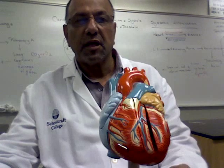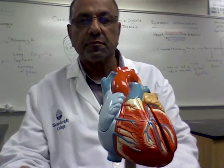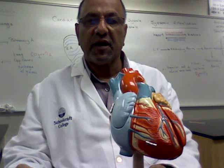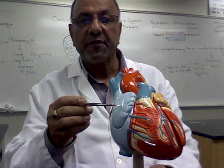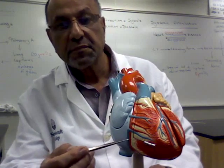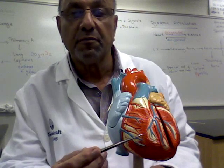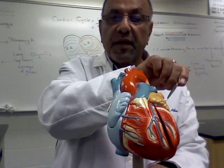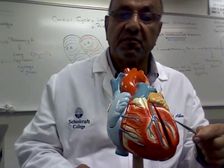Sir Mohammed Abbas, and this is a model of the human heart. This is the frontal view of the heart. That is the right atrium, right ventricle, left atrium, left ventricle.